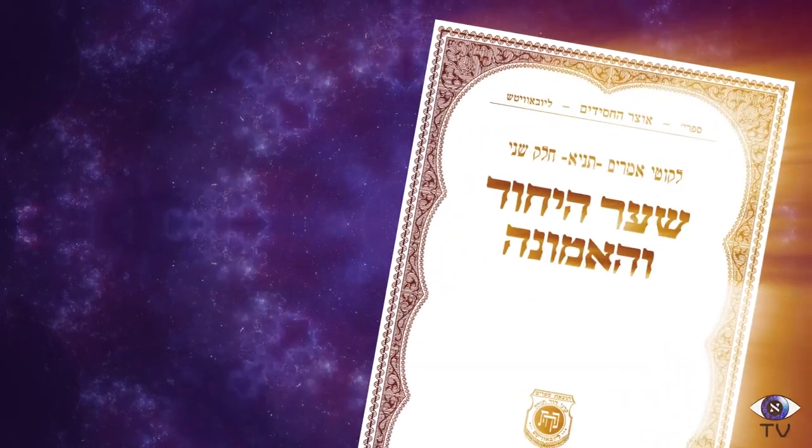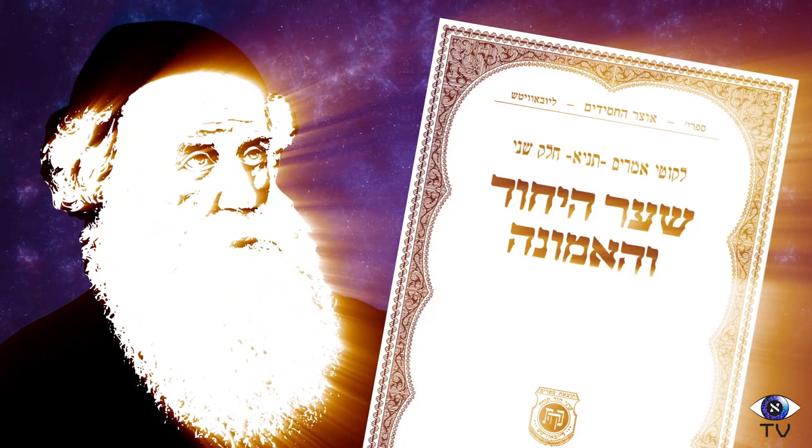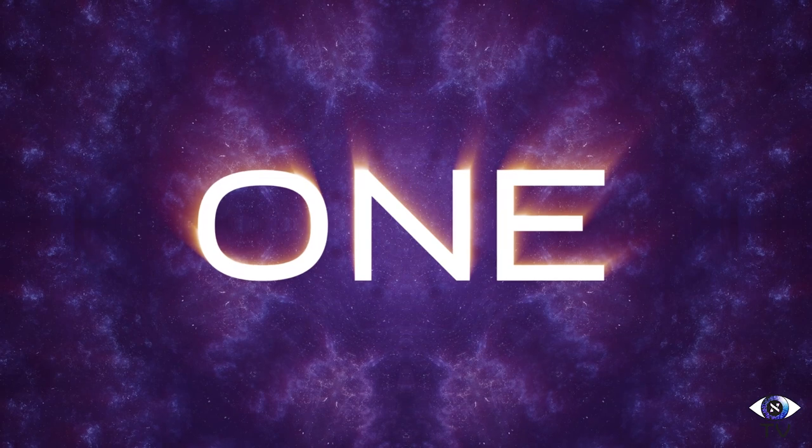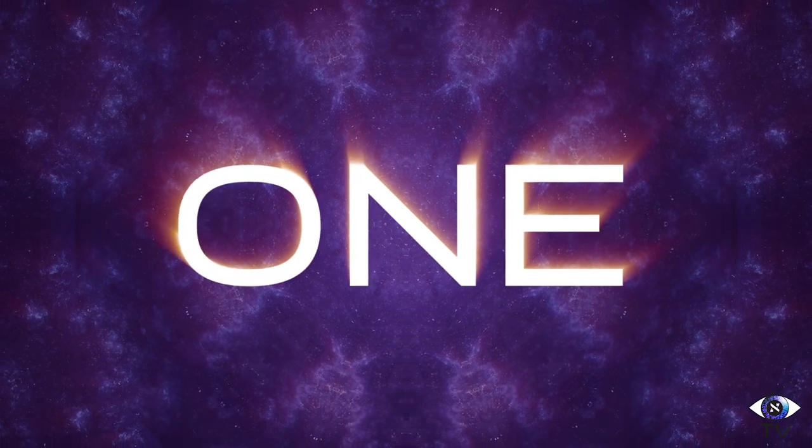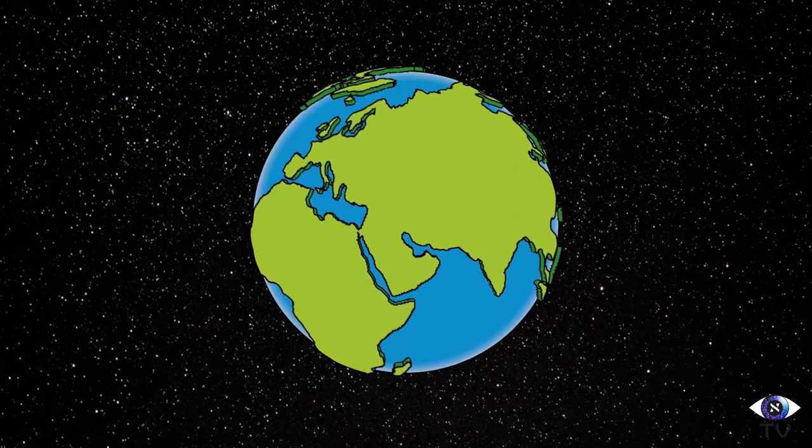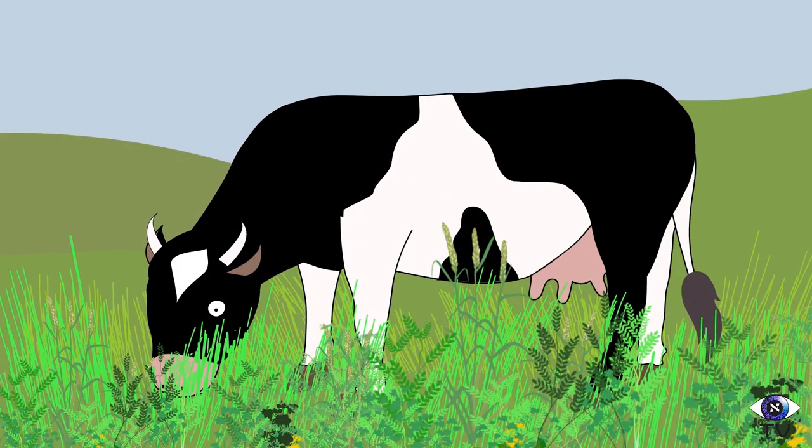This series is based on the Tanya written by the Alter Rebbe, Rabbi Shneur Zalman. He teaches that God is one, meaning that there is really nothing else here except God. All the galaxies, planets, animals and plants are all different forms of Godly energy.